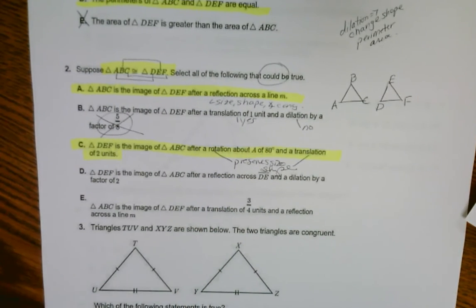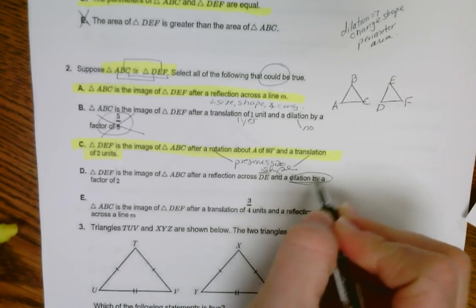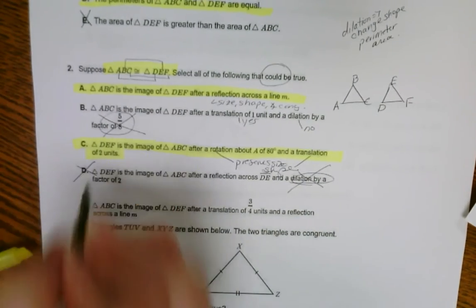DEF is the image after reflection and then a dilation. Here's this word dilation again. We know it can't be that one.